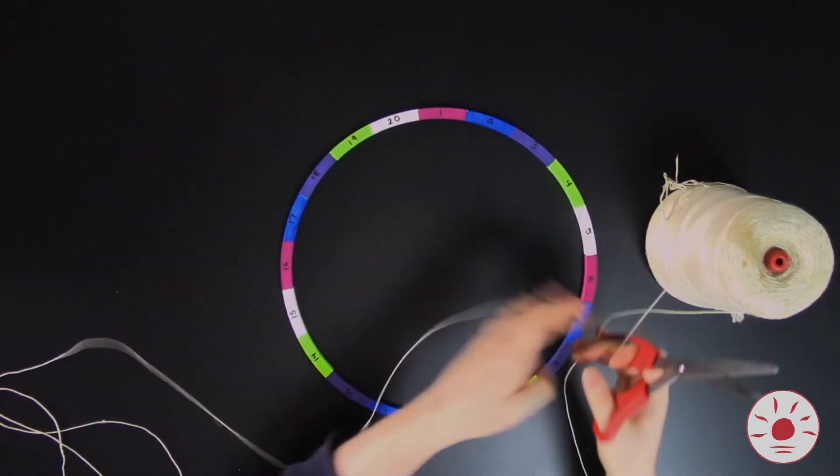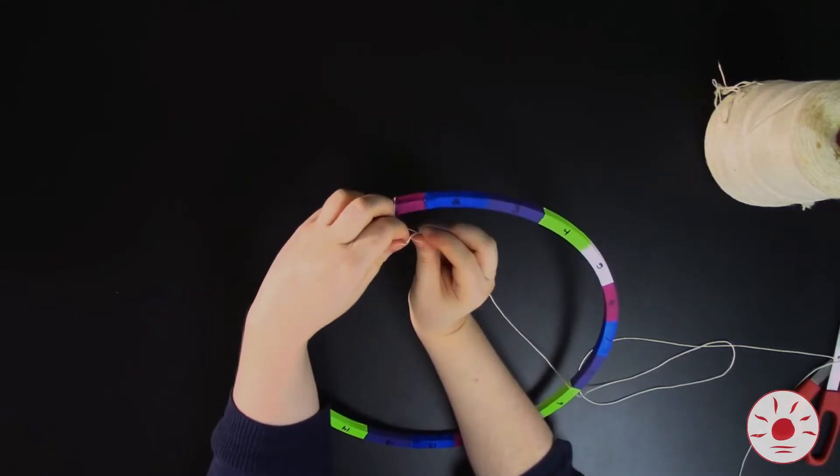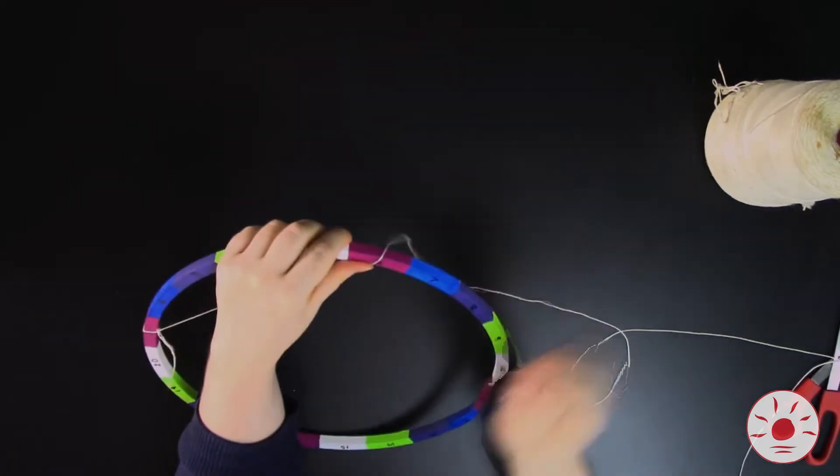Now we're going to add the string. To start, cut a piece of string so it's several feet long, and tie the end to section 1. Now count 5 sections over, and tie the string to the hoop again.